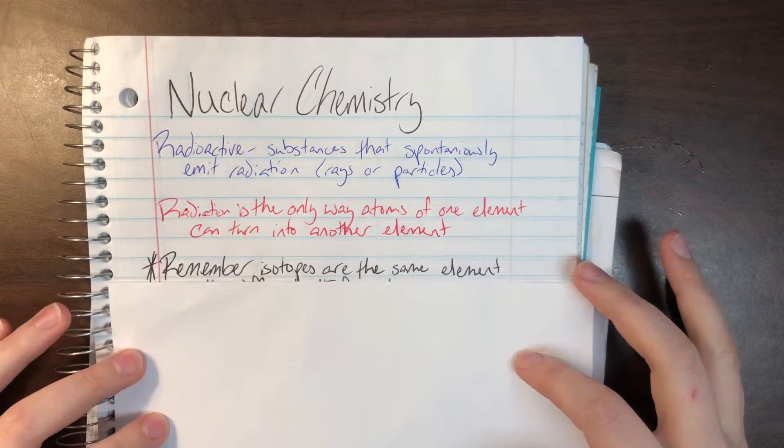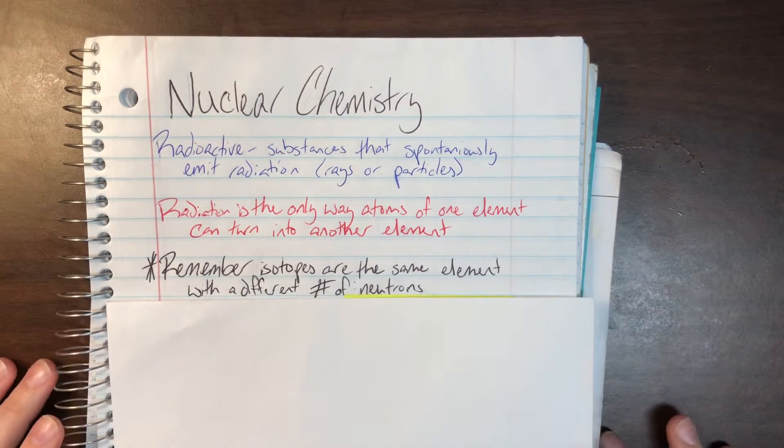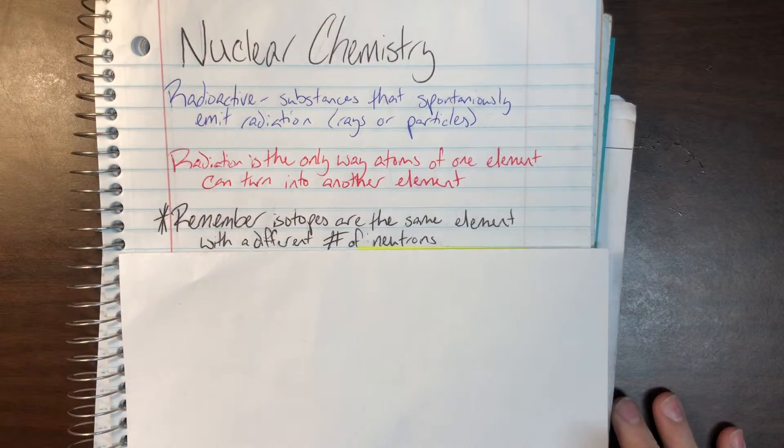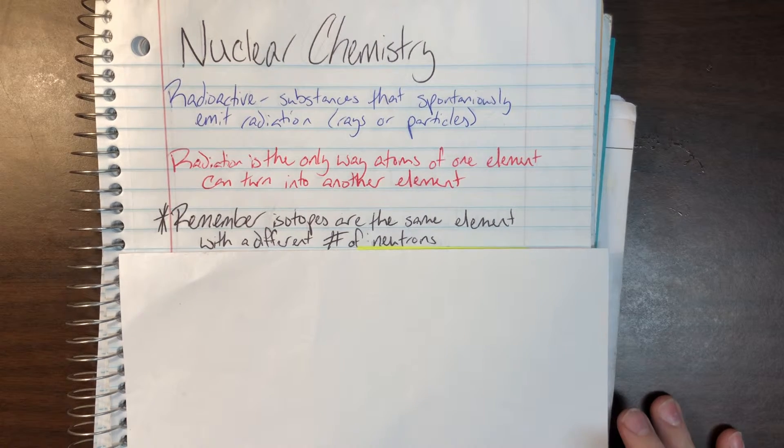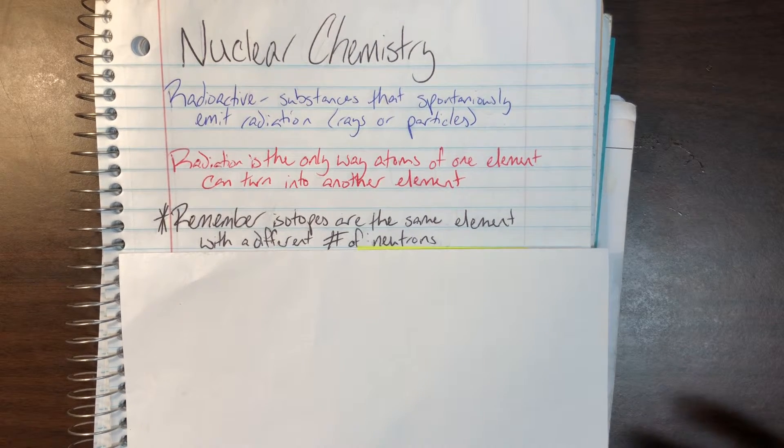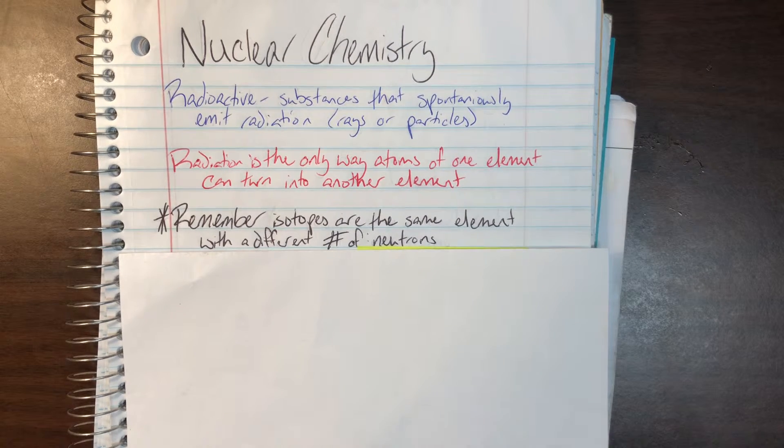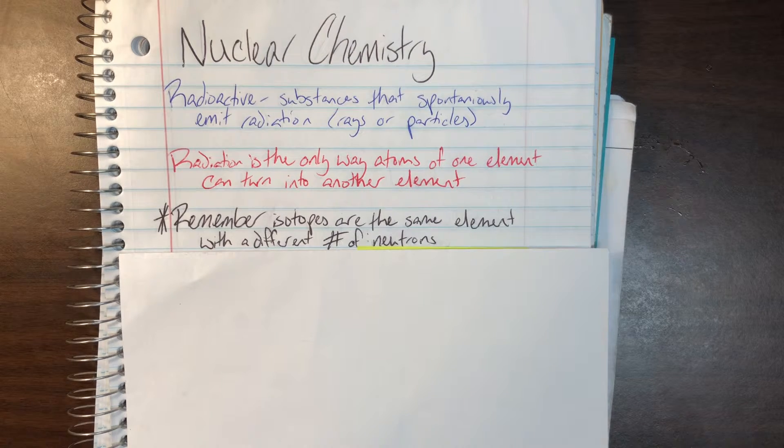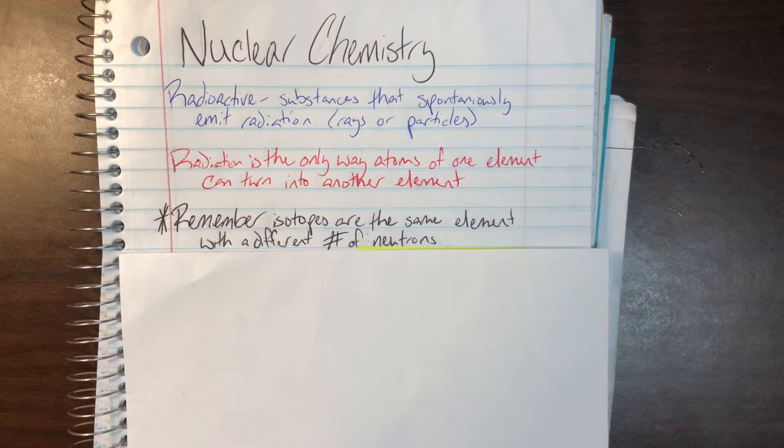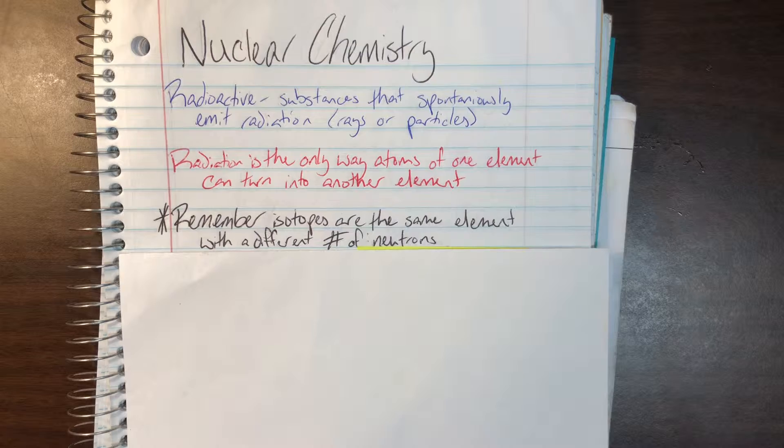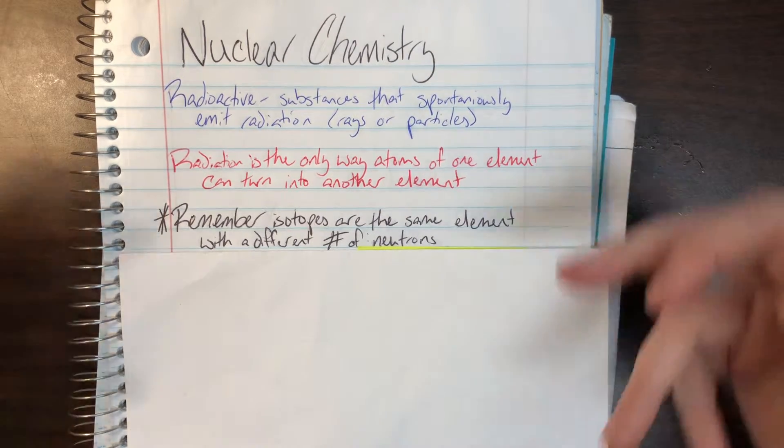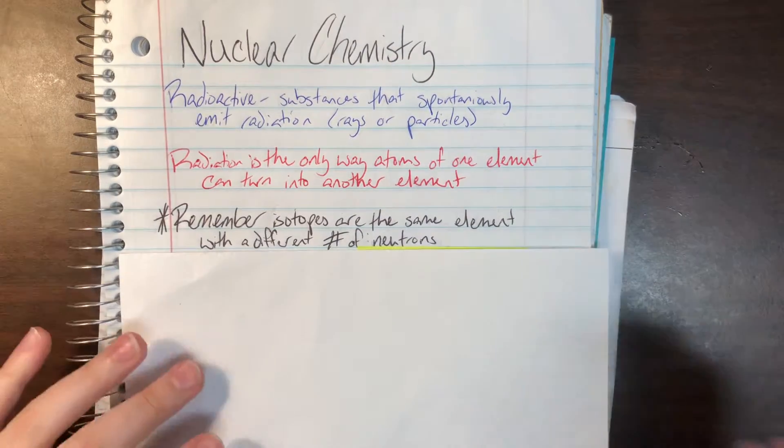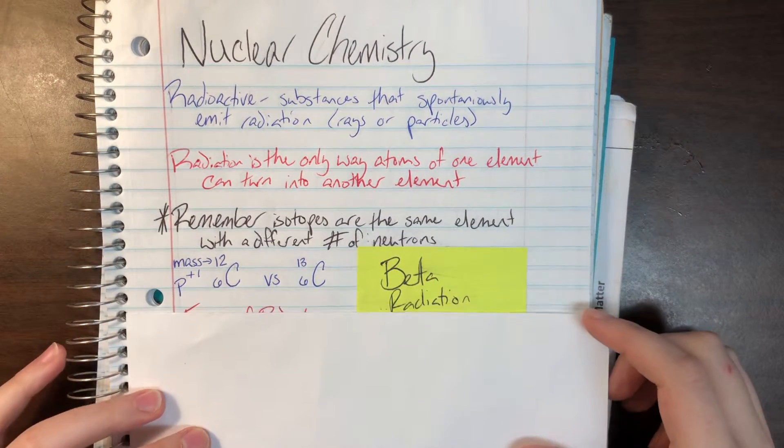So a real quick reminder here: an isotope is going to be an atom that is of the same element, that means that they have the same number of protons, but they're going to have a different number of neutrons and therefore a different mass. If I don't have the correct number of neutrons, I won't be stable and I will become radioactive. I will start emitting radiation in order to gain that stability.